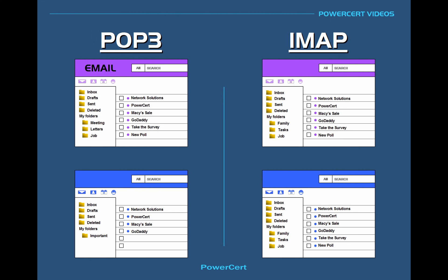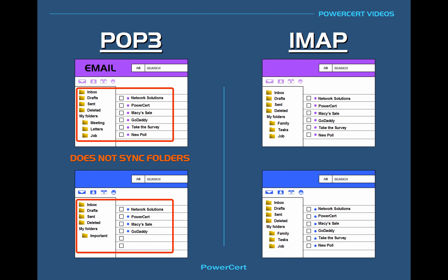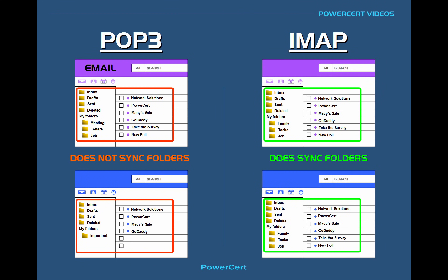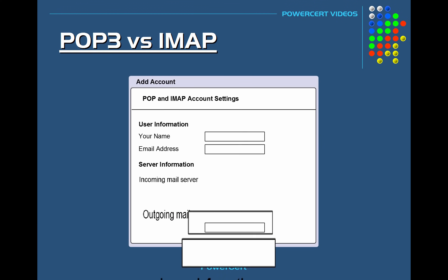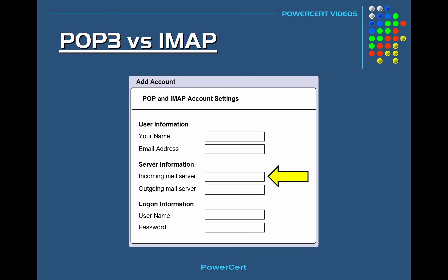As a comparison between POP3 and IMAP: on the left we have POP3, and the folder structure is different between the two email clients because POP3 only downloads the contents of your inbox folder and doesn't do any email or folder syncing. But in IMAP, everything is the same — the email and folder structure are identical because IMAP syncs everything with all of your devices. Both protocols are configured in your email client's incoming server settings. For example, for Gmail with POP3 you'd use pop.gmail.com, or with IMAP you'd use imap.gmail.com.